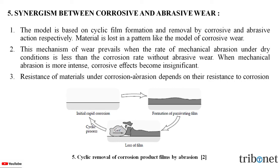Here, in this figure, we can see how the initial rapid corrosion takes place after the formation of a passivating film, and then the loss of the film — then this cycle repeats.